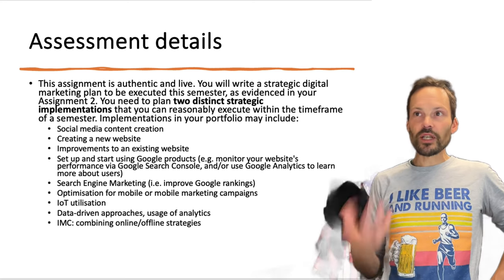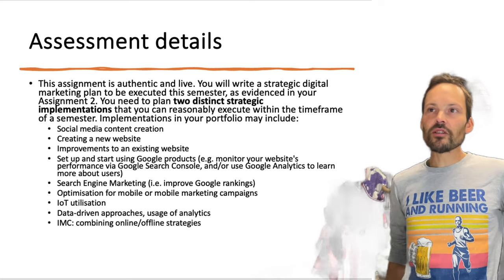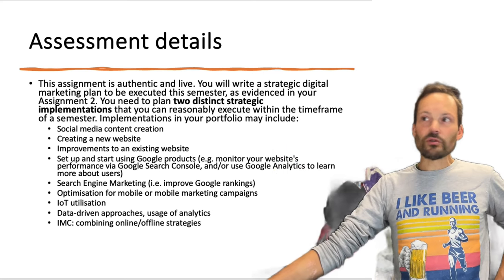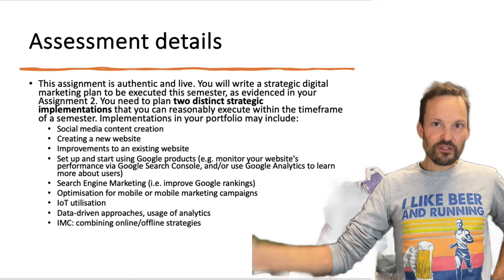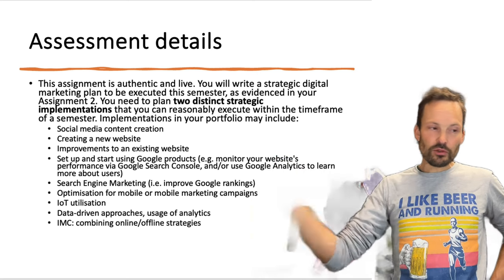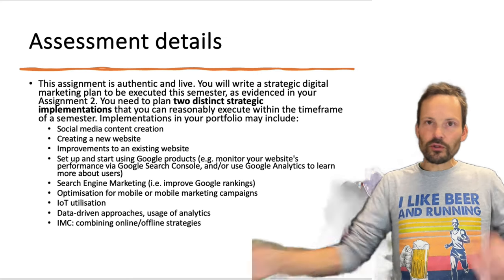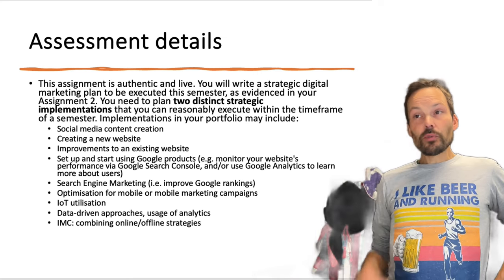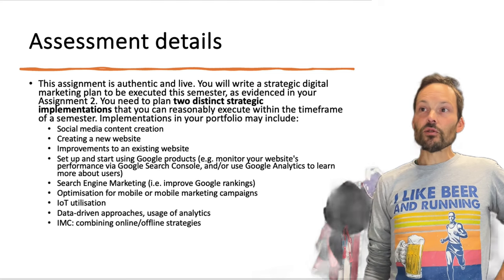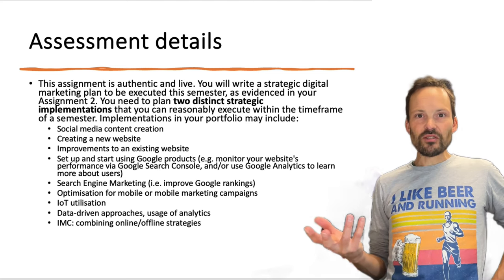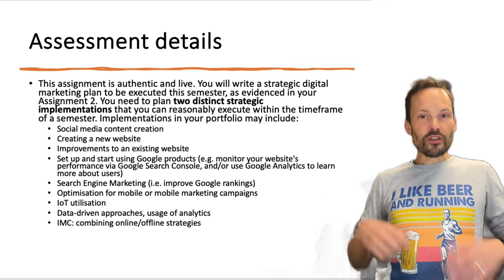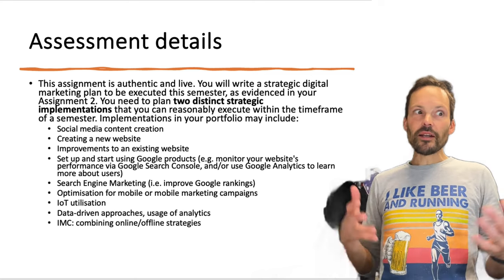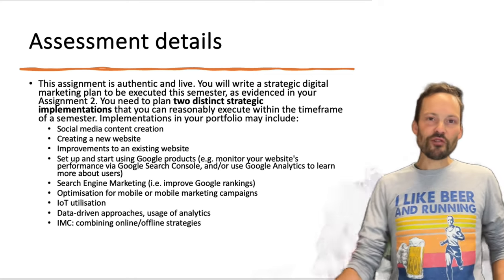Here's a list of some implementations you may include: social media content creation, creating a new website or improving an existing one, setting up and starting to use a range of Google products such as Google Search Console and Google Analytics — not just registering but actually using them to get meaningful marketing outputs. It could also be search engine optimization or search engine marketing, improving Google rankings, optimization for mobile, utilization of the Internet of Things, more data-driven approaches, uses of analytics, integrated marketing communications, or a seamless integration of online and offline strategies.